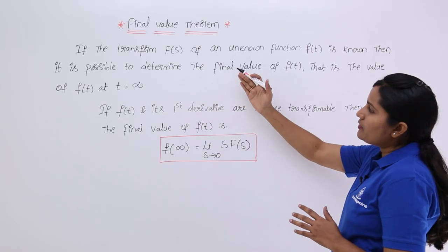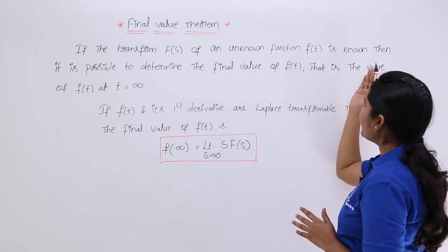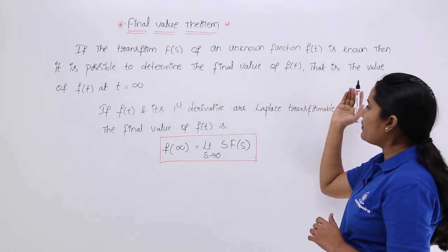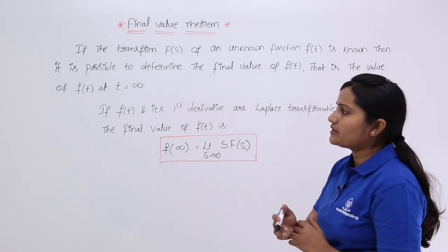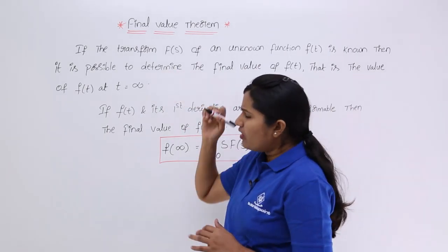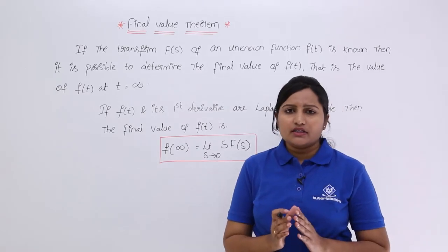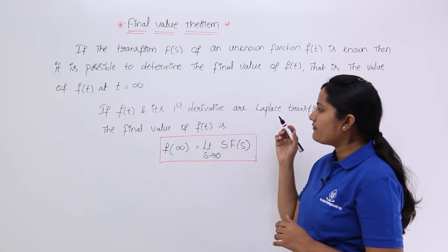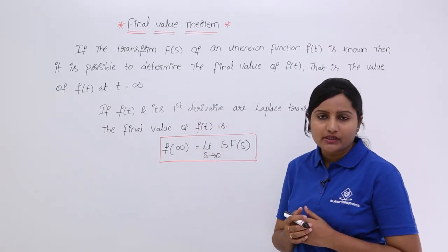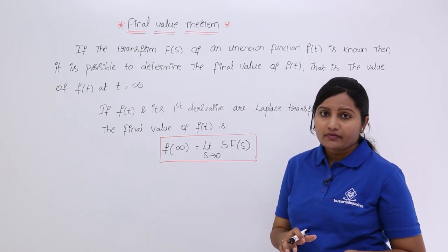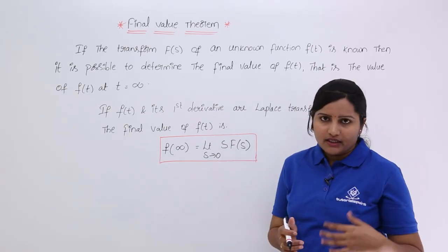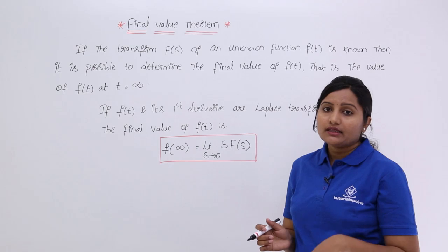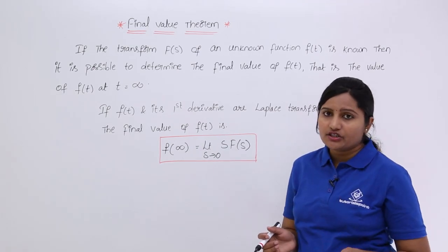If the transform f(s) of an unknown function f(t) is known, then it is possible to determine the final value of f(t) — that is, the value of f(t) at t equals infinity. Both the Final Value Theorem and the Initial Value Theorem are applicable only when the function and its first derivative are Laplace transformable. If the unknown signal or its first derivative are not Laplace transformable, you will not be able to obtain the final or initial value.